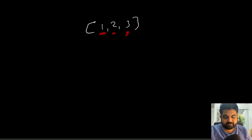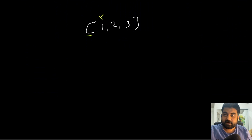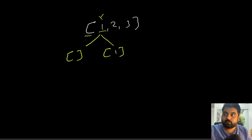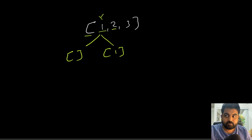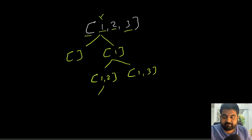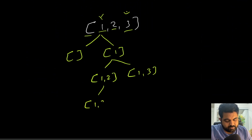Let's walk through a broader scenario with values 1, 2, and 3. At the first position we have two options: include one or not. If we include one and then include two we get one and two. If we include one but not two we get one and three. Going deeper, after one and two, we decide whether to include three — if yes we get one two three, if no we get just one and two.